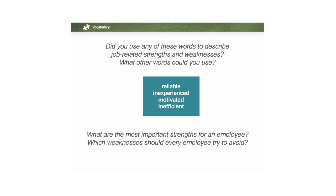There are words in the blue block: reliable, inexperienced, motivated, and inefficient. We used a couple of those. Could you add any other words to the list? What other words could you use in place of these words in the blue block? Those are great — ambitious and honest are also very good qualities in an employee.